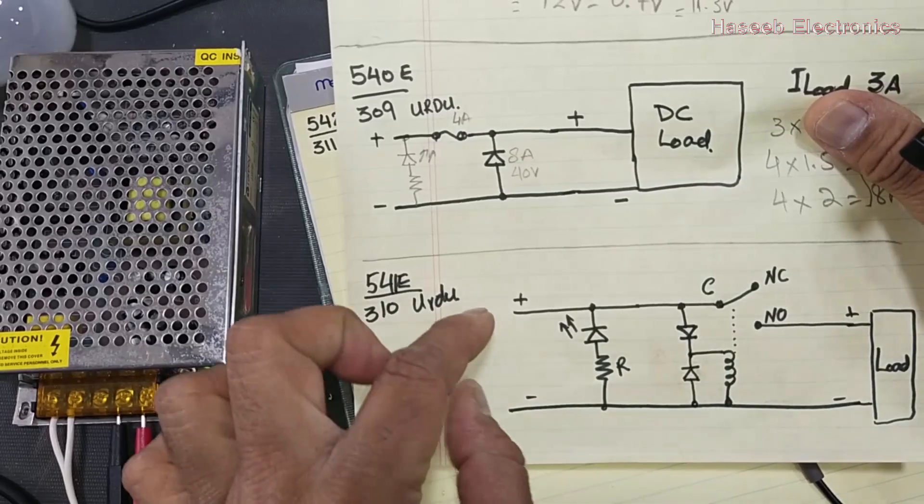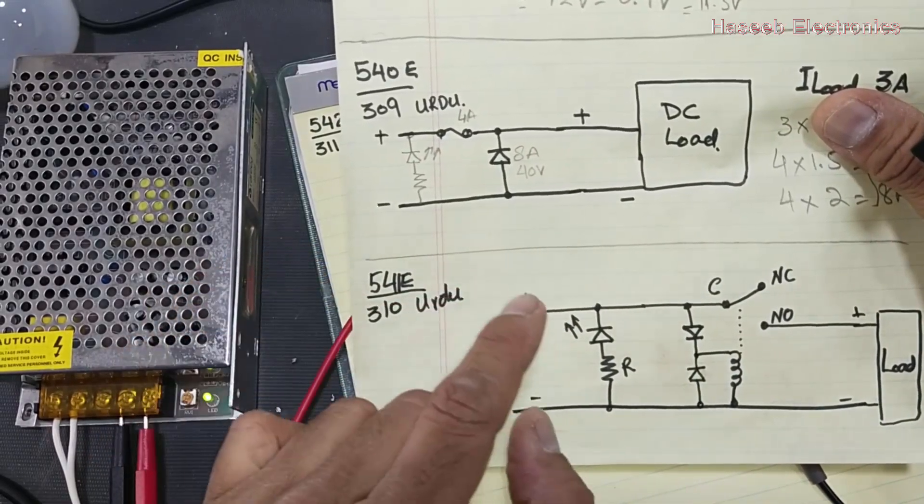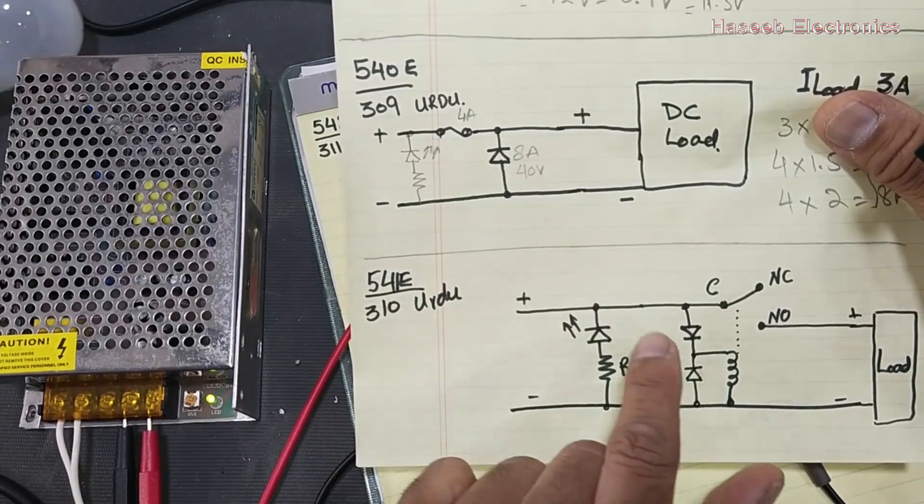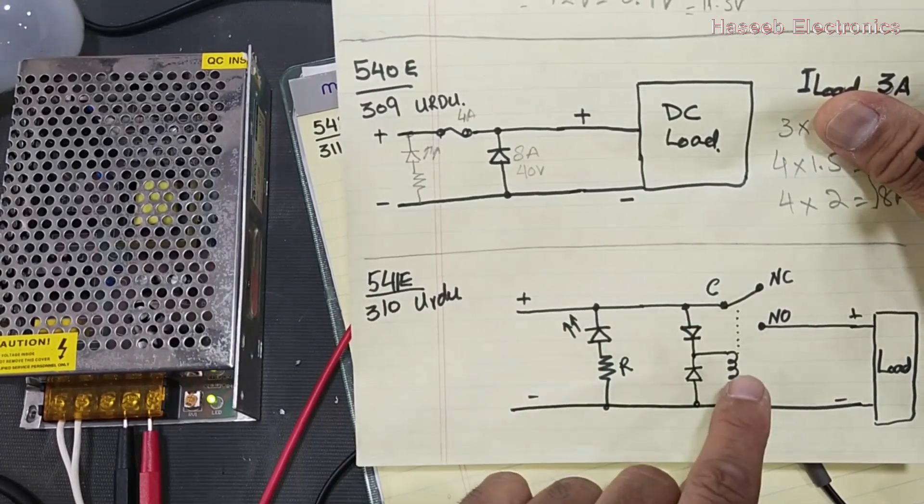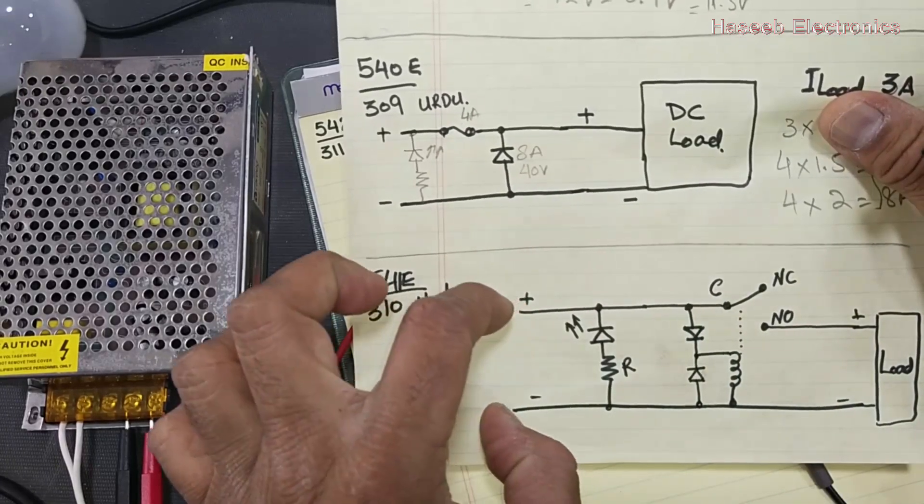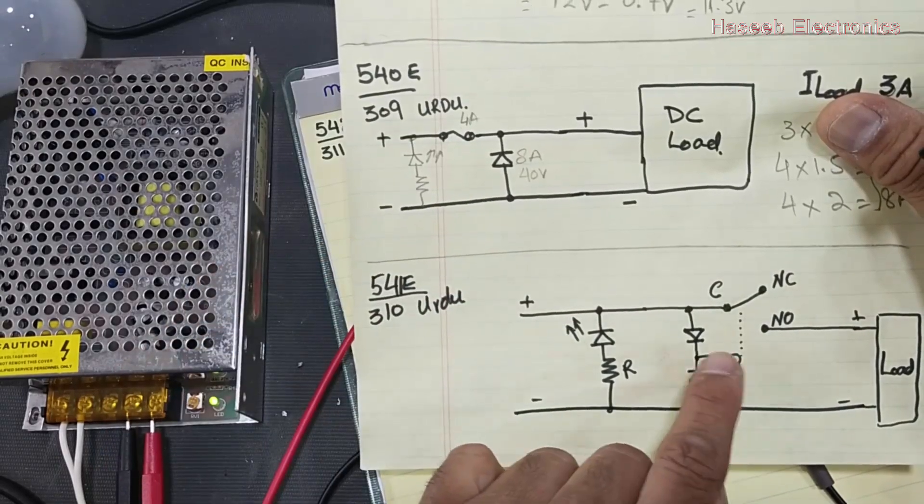The problem in this circuit is that this relay will remain on while the load will operate in good polarity. The relay must turn on only in reverse polarity so that it can disconnect the load.